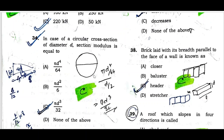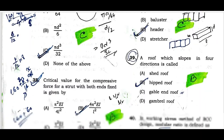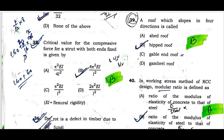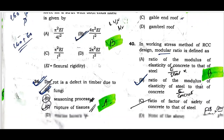Question number thirty-four: For a circular cross section of diameter D, the section modulus is equal to π D cubed by 32. Question number thirty-five: The critical compressive force for a strut with both ends fixed is given by 4π²EI divided by L squared.